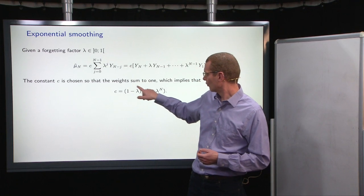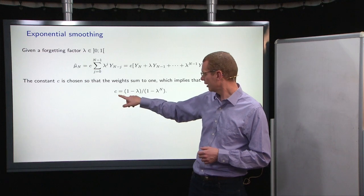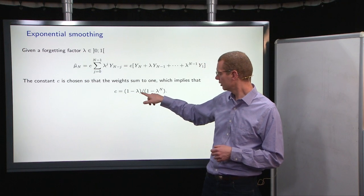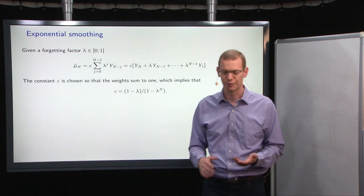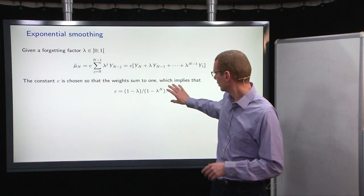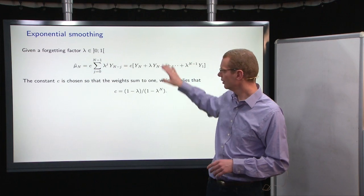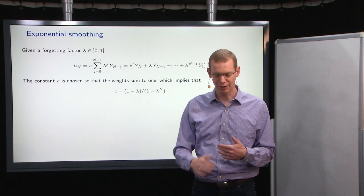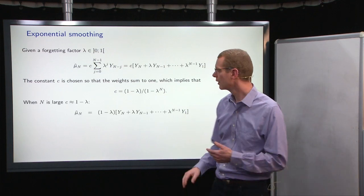And what we find is that that constant would be one minus lambda divided by one minus lambda to the n power. So with that all together, we can at any time have an estimate.